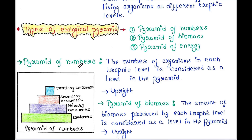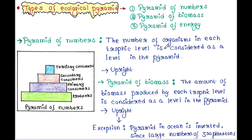First is pyramid of numbers. The number of organisms in each trophic level is considered as a level in the pyramid. You can see here different trophic levels shown. The number of organisms is highest in producers and lowest in tertiary consumers, with secondary consumers and primary consumers in between.